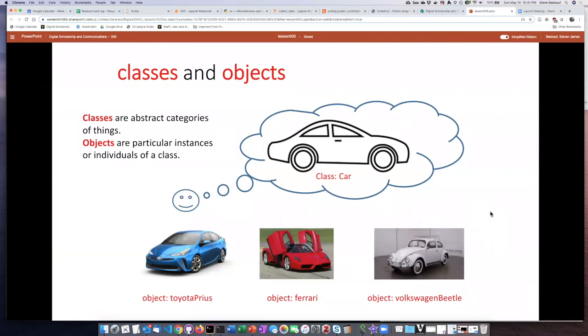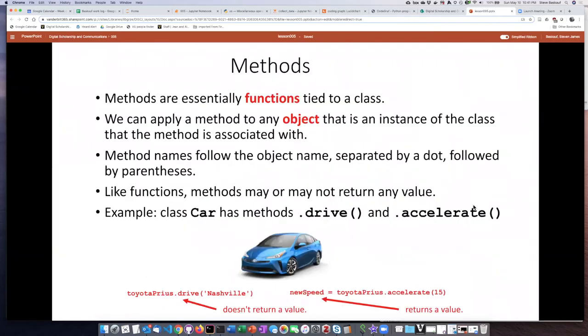A method is, for all practical purposes, a function that is tied to a particular class. And this method we can apply to any object that is an instance of that class that the method is associated with.